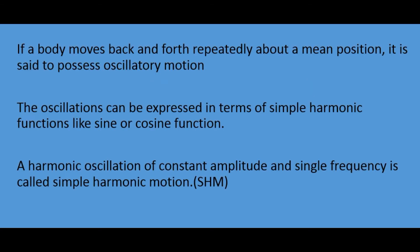In this video we see about Simple Harmonic Motion. Simple Harmonic Motion is a type of oscillatory motion. Oscillatory motion means back and forth motion about the mean position. If a body moves back and forth repeatedly about its mean position, that is the equilibrium position, it is called oscillatory motion. This oscillation can be expressed in terms of simple harmonic functions like sine or cosine.